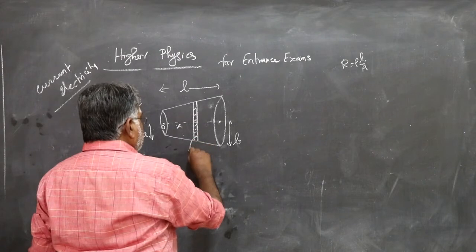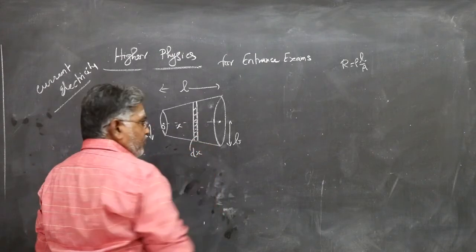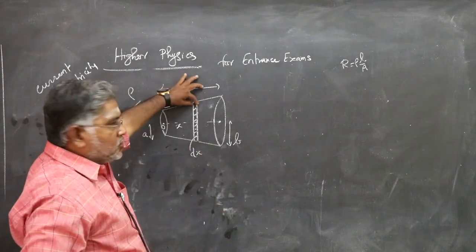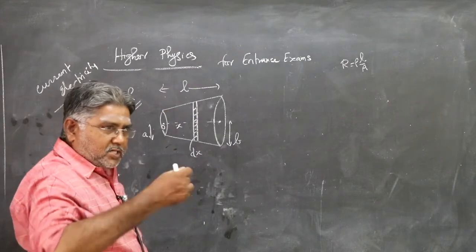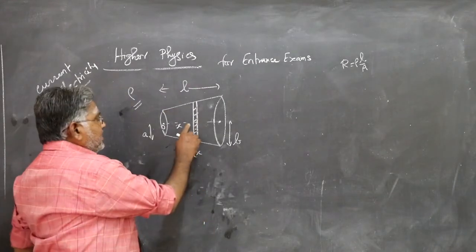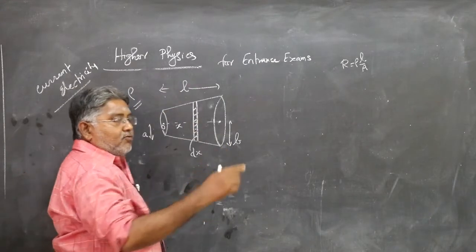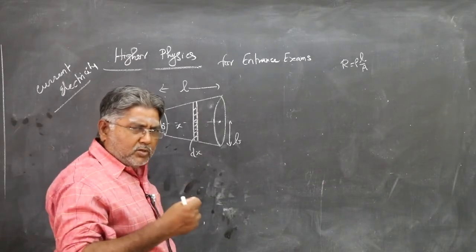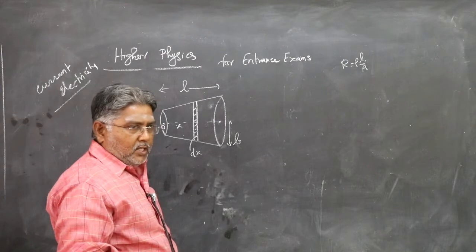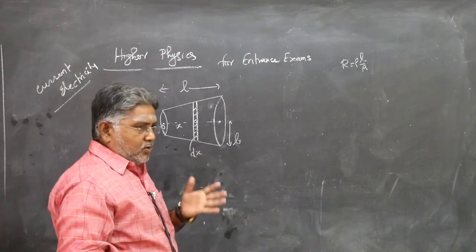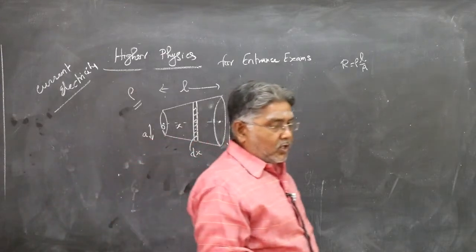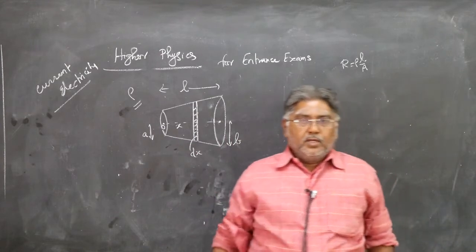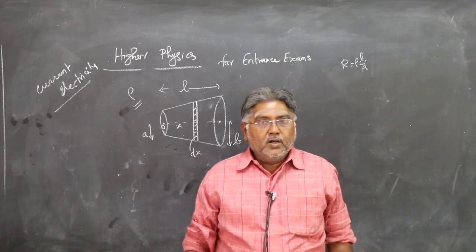This is x and the thickness of the element is dx. First you find the resistance of the element. The thickness is so small that you can neglect the change in area of cross section. You take a very small thickness for the element.